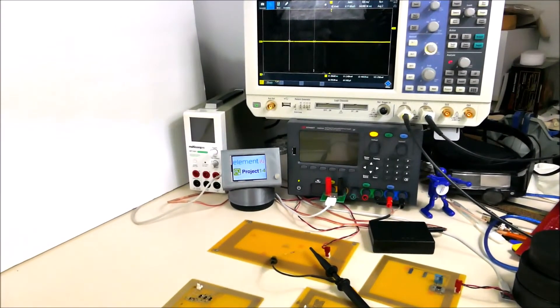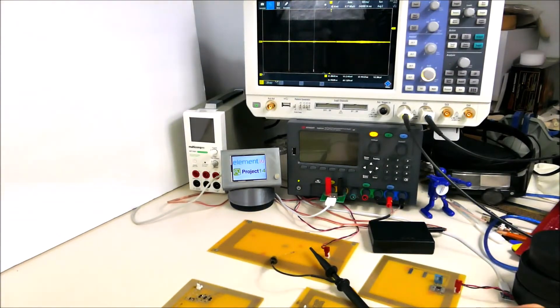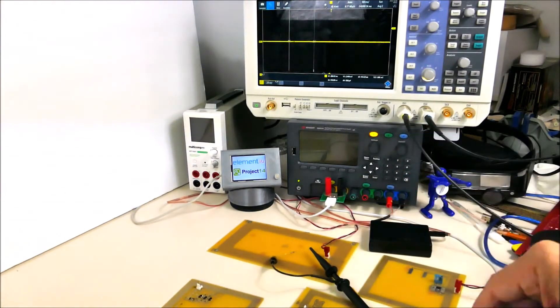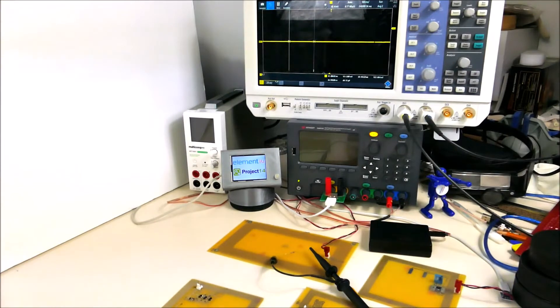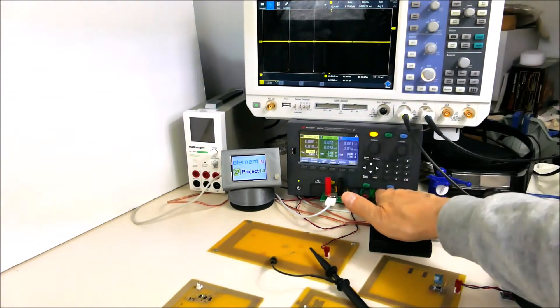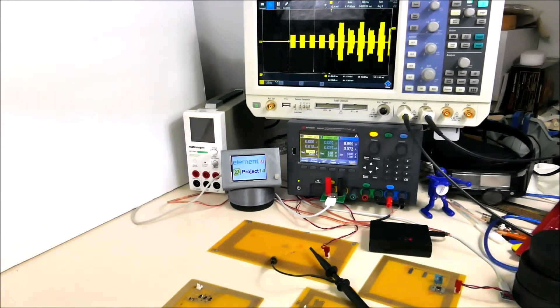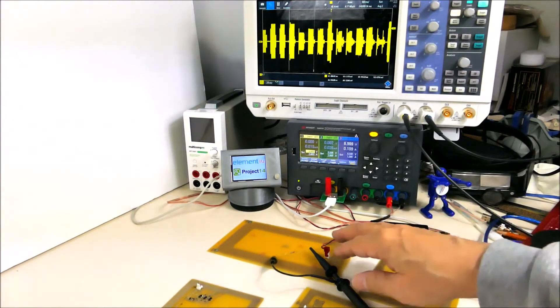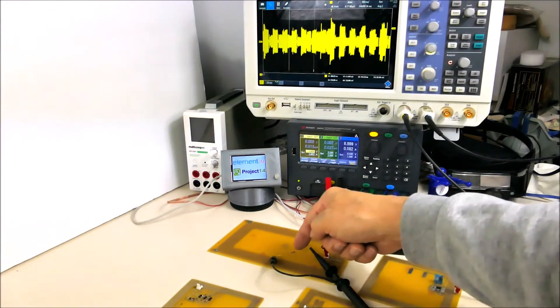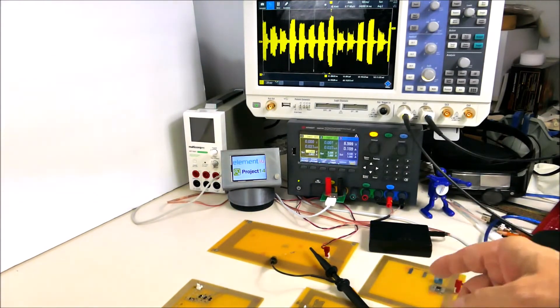We're just going to have a quick look at what the signals coming from this 134.2 kilohertz RFID reader look like on an oscilloscope. If I turn on the power,